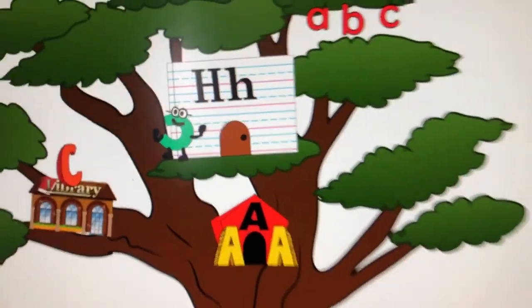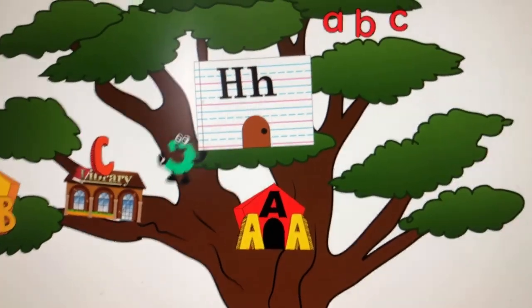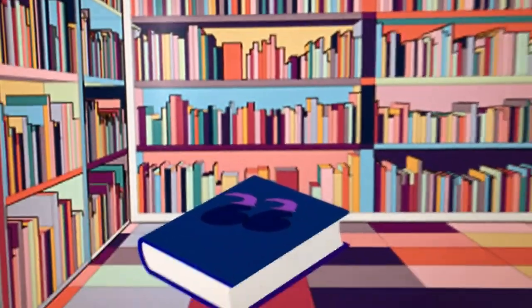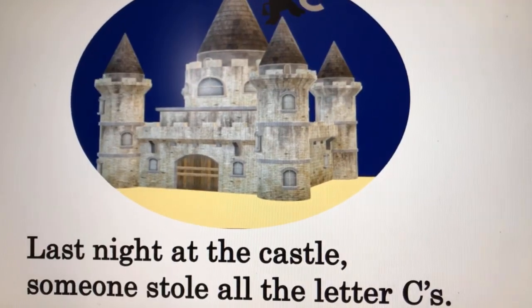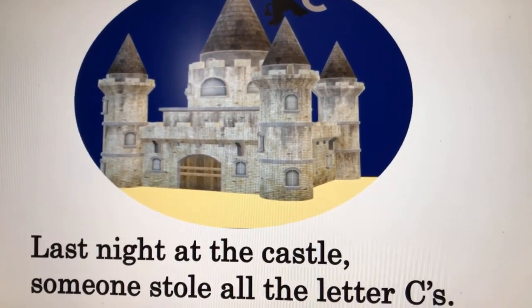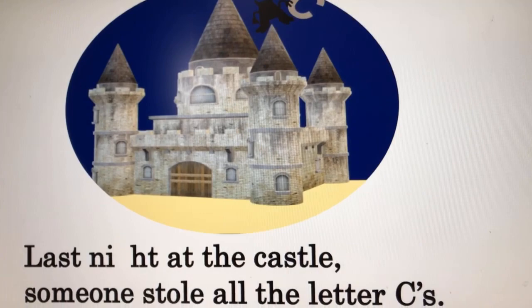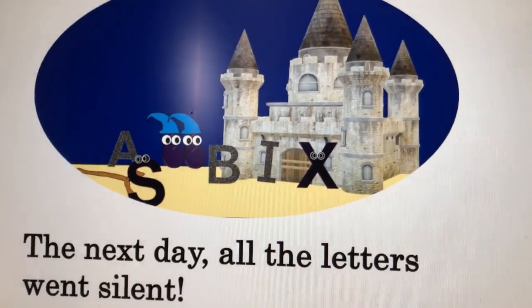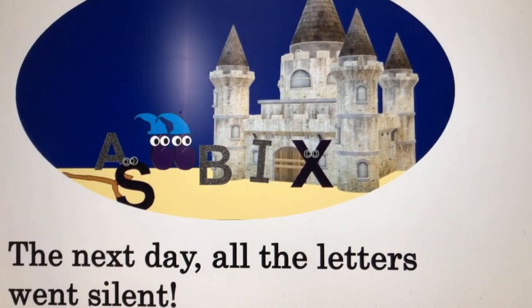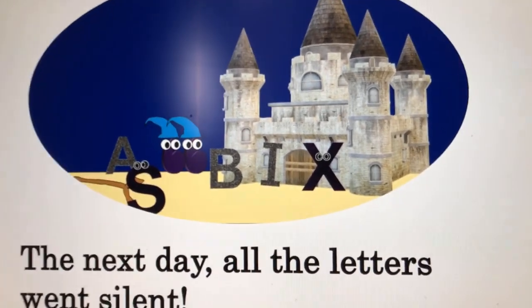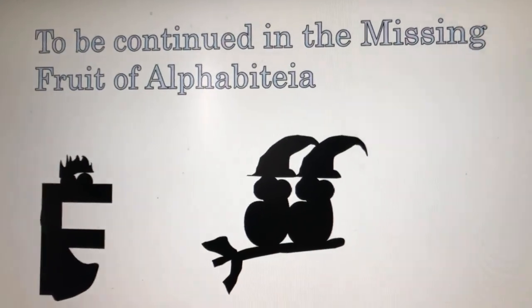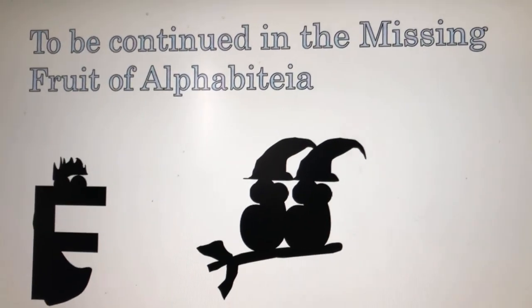Today in the alphabet tree, letter C is off to the library to read his favorite book, The Magic Quotations. Last night at the castle, someone stole all the letter C's. The next day, all the letters went silent. What happens next? To be continued in the missing fruit of Alphabetia.